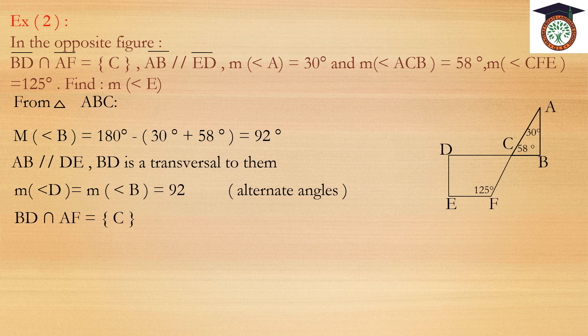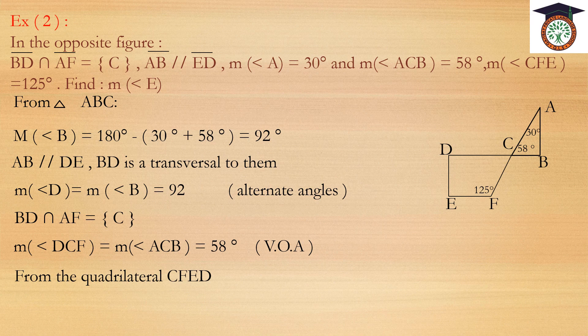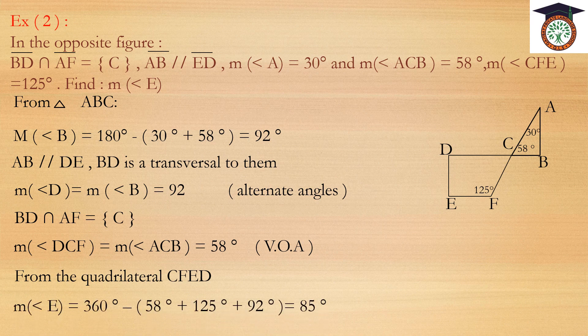Since BD intersects AF at C, measure of angle DCF equals measure of angle ACB equals 58 degrees — vertically opposite angles. From the quadrilateral CFED: measure of angle E equals 360 minus (58 plus 125 plus 92), which equals 85 degrees.